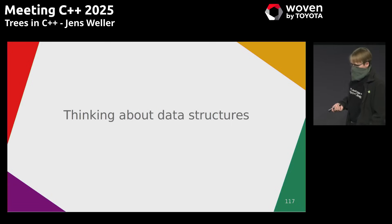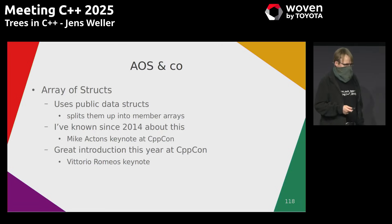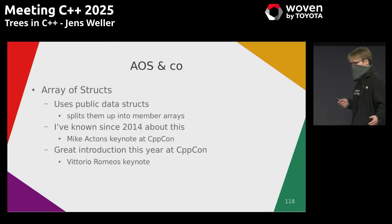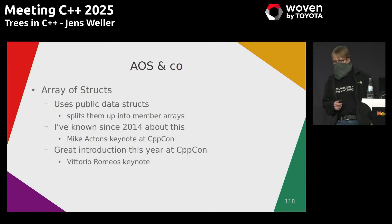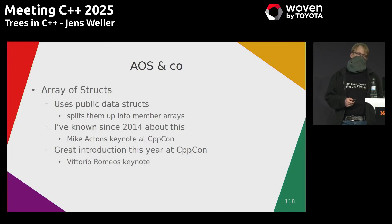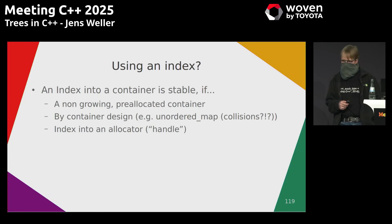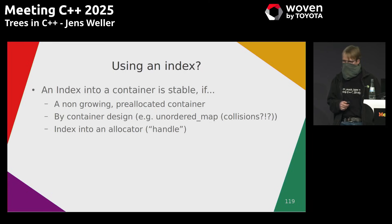I've been thinking about data structures, and specifically the Array of Structs concept — it's basically a struct with an array inside, not a very complicated idea. I've known about this since at least 2014 when there was a great keynote by Mike Acton, and Vittorio Romeo brought it up again this year in a keynote at CppCon. One particular idea stuck with me: using an index where you might otherwise have used a pointer, like in a binary tree.